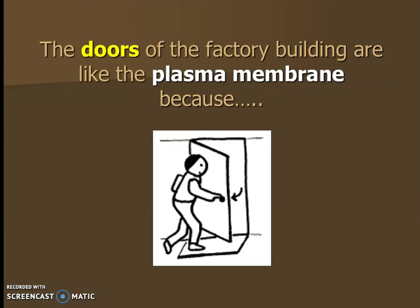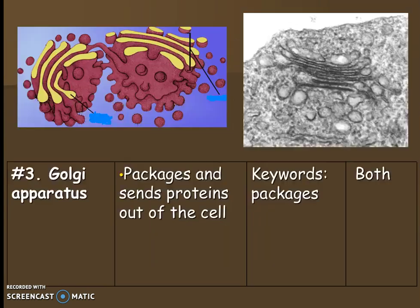The plasma membrane or cell membrane is like the doors of the factory, because the doors allow things to enter and exit the factory just like the cell membrane allows things to enter and exit the cell. Make sure you've added your analogy and filled in any missing words from that row.